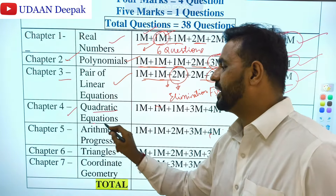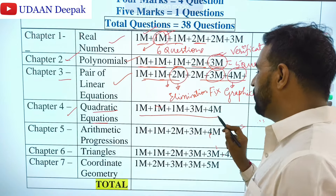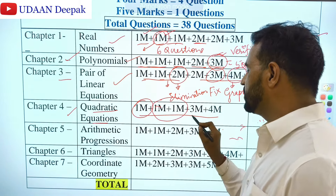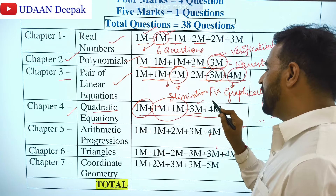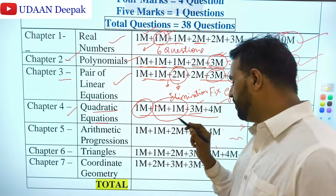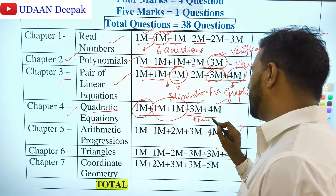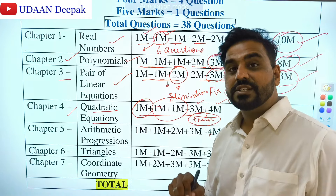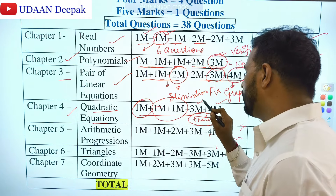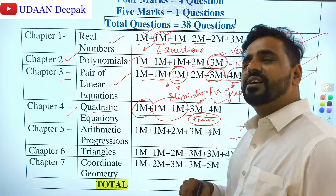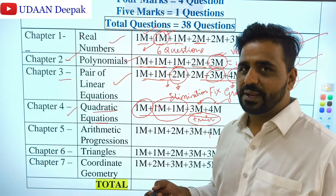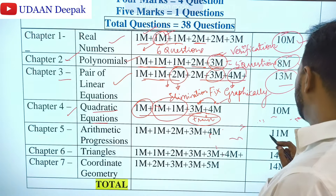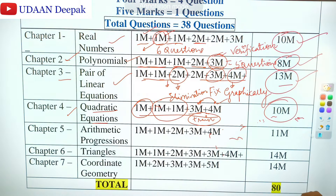Chapter 4 — Quadratic Equations — you may expect 5 questions: one objective, one 1-mark, one 2-mark, one 3-mark, and one 4-mark question. One verbal problem (like a train problem) for 3-mark is fixed. For 3-mark and 4-mark, expect questions related to word problems only. The middle-term splitting method and finding the roots is important. Total marks from Quadratic Equations: 10.